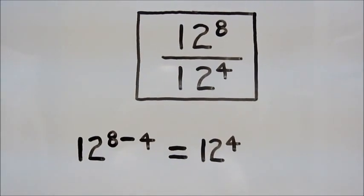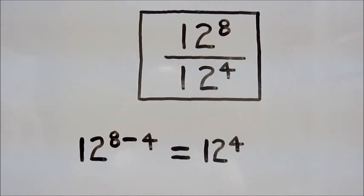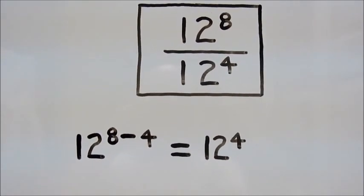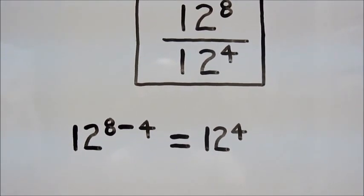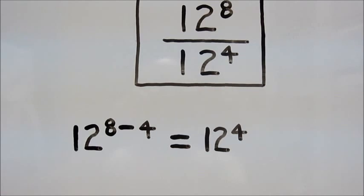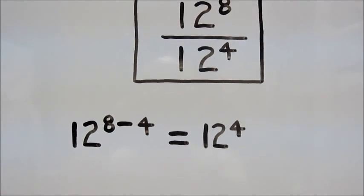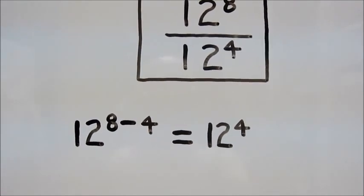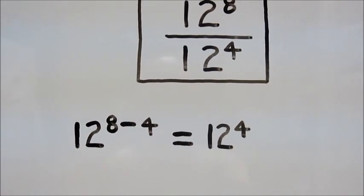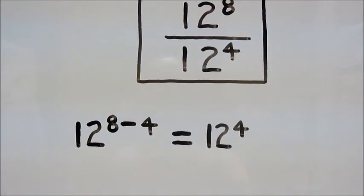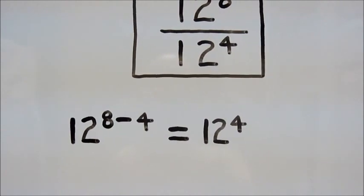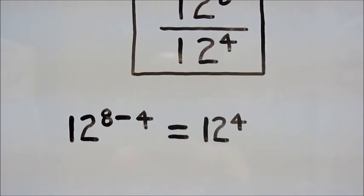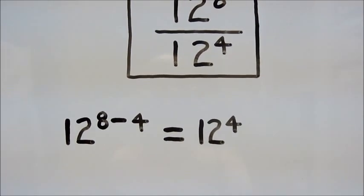In order to simplify the problem, we rewrite it horizontally, put down our base of 12, take our exponent 8, subtract it by 4, and we're left with 12 to the 4th power.